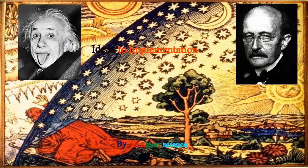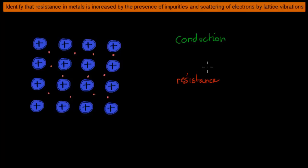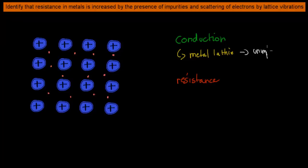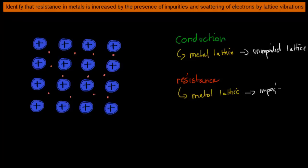In the last video, we quickly talked about conduction and resistance, and what that means when it comes to a metal lattice. If we have electrons conducted in a metal lattice, conduction means they are freely moving, unimpeded through the lattice, whereas resistance means they are actually impeded — their movement is not ideal.